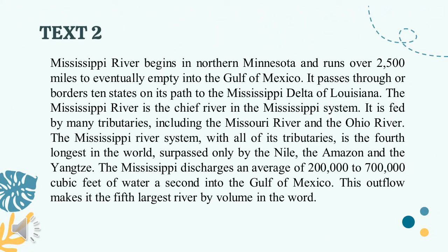Same instruction for text number two — read, analyze, and identify the main idea. You may pause this video, then continue to watch to determine the correct answer. The correct answer is 'Mississippi River.' That's the main idea of the text — it has something to do with the Mississippi River.